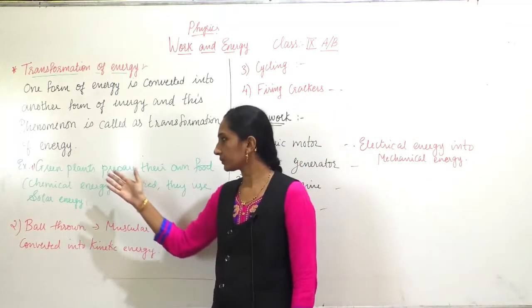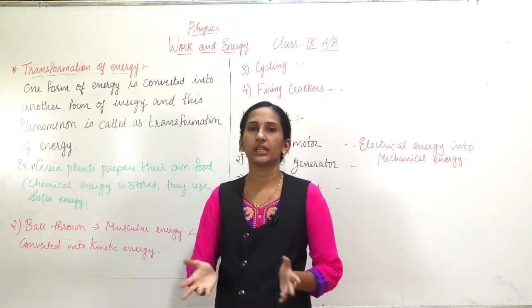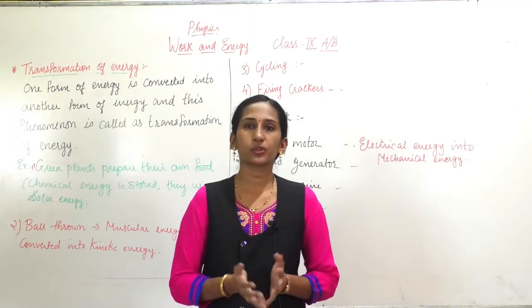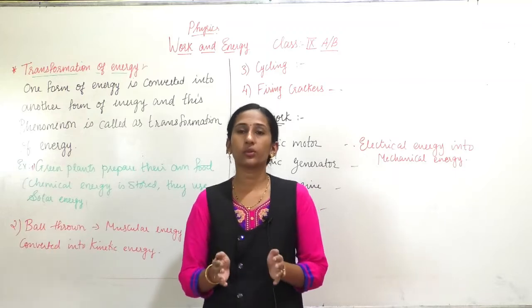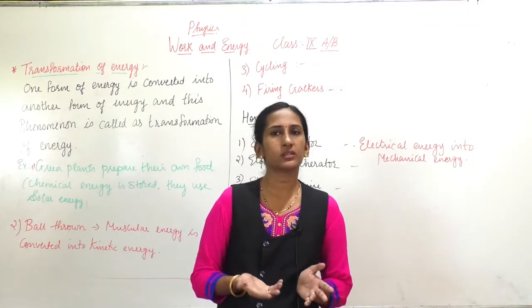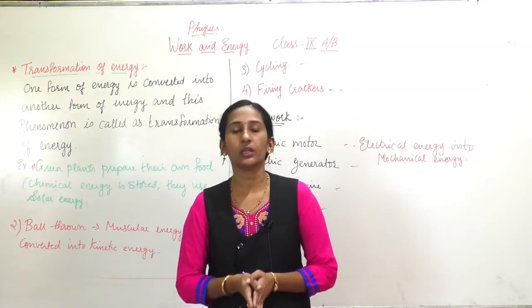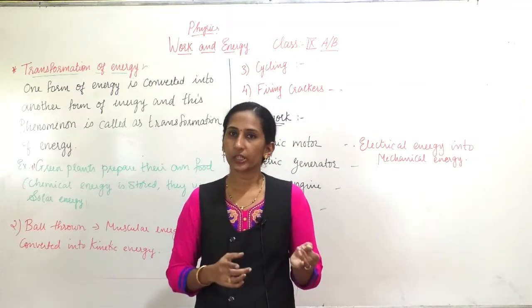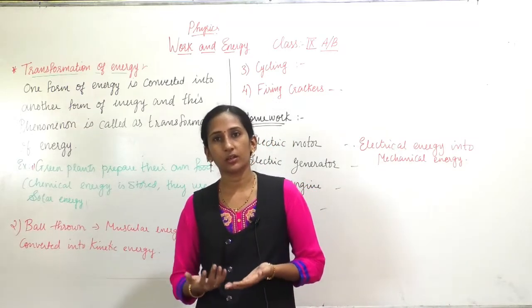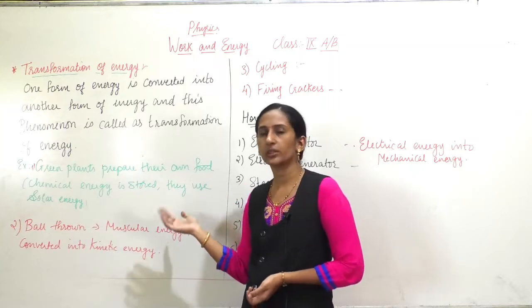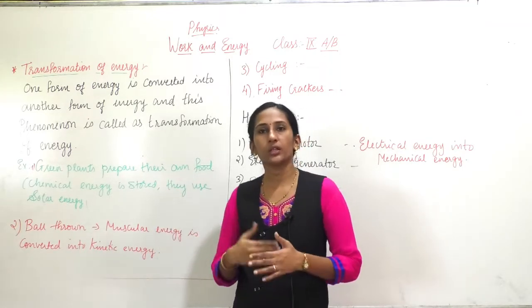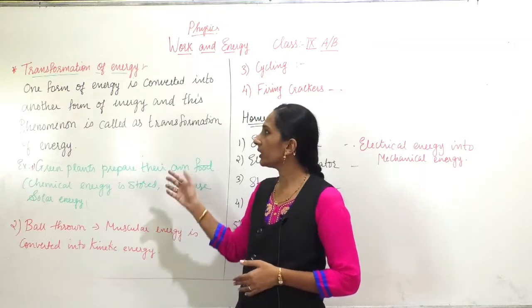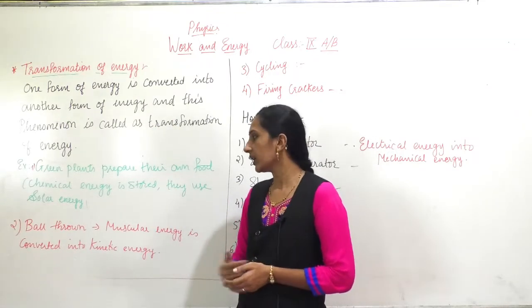One daily life example is green plants preparing their own food. Have you ever thought how a plant prepares food and what energy transformations are involved? Green plants have chlorophyll, which stores chemical energy. They use solar energy — sunlight — and through the process of photosynthesis, solar energy is converted into chemical energy to produce food.